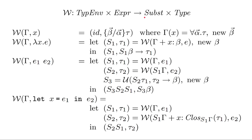We're gathering constraints within a substitution where we make recursive calls. We have four different versions of this algorithm, one for each of our four different expressions — this is effectively doing pattern matching. If we're calling Algorithm W with a context and a variable expression, we do this. A function abstraction, we do this. A function application, we do this. And a let statement, we do this.